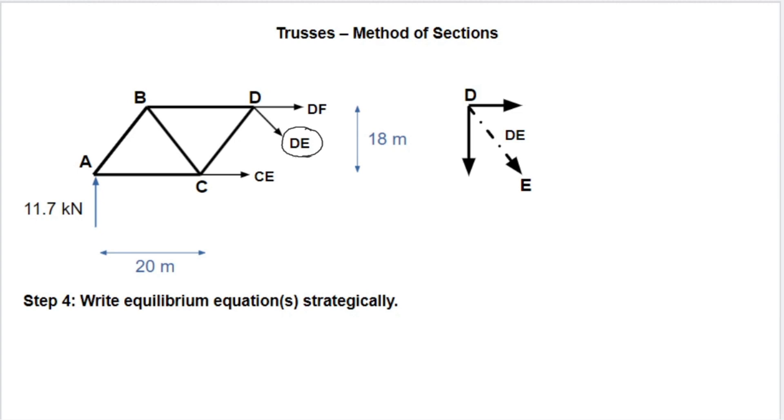So our support reaction is purely vertical. Our CE and DF internal member forces are both horizontal. And then DE is a force at an angle. So it has both horizontal and vertical components. So if we look here at our zoomed in view, DE is represented by the dotted line.